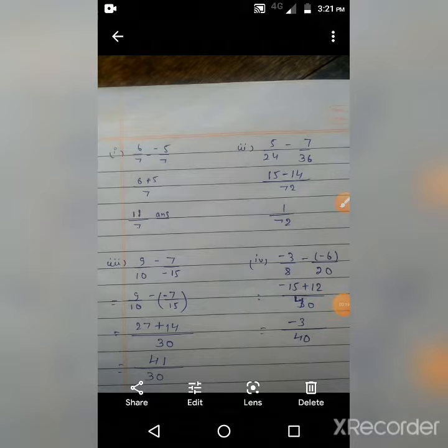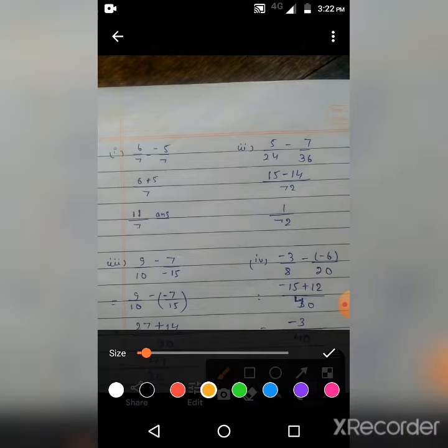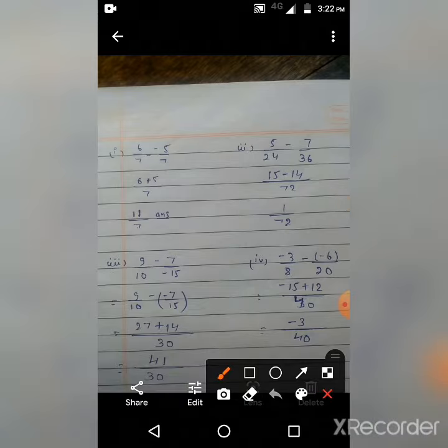So guys, here our first question: 6/7 minus negative 5/7. So this we have minus, this is easy. Here we are looking at minus here and minus here, and minus minus is plus. Here we have 6 plus 5 by 7. Here denominator equal, so 7 direct. So 6 plus 5 is equal to 11/7.